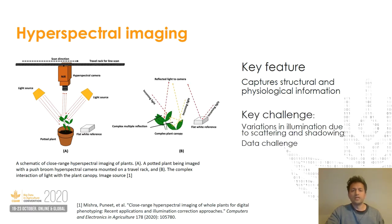Spectral sensors are highly sensitive to changes in illumination. When working with complex objects like plants, scattering and shadowing effects can corrupt the collected data cube, resulting in poor phenotypical traits.